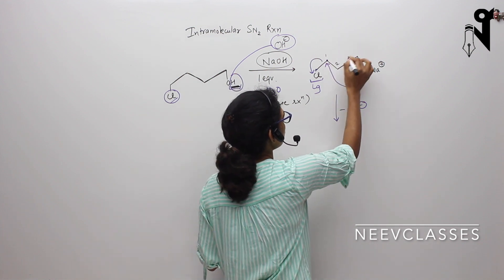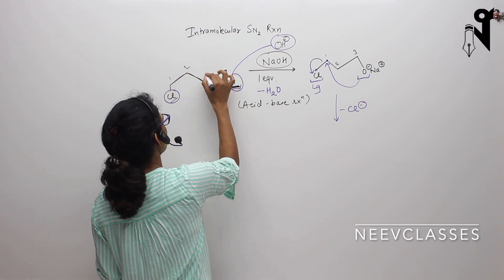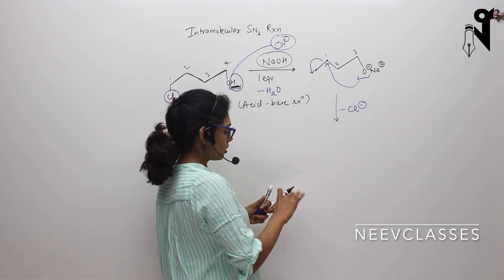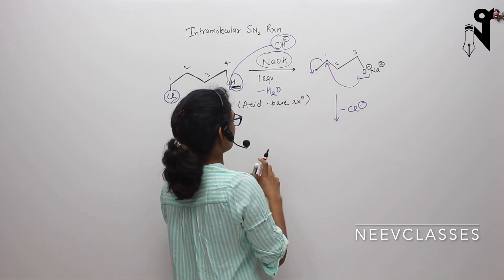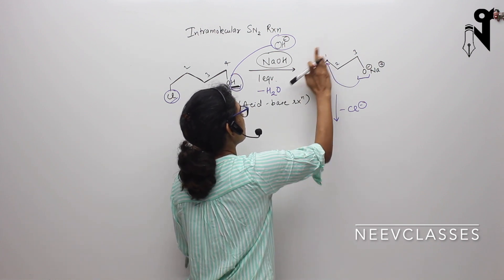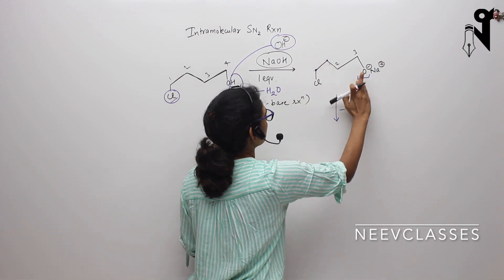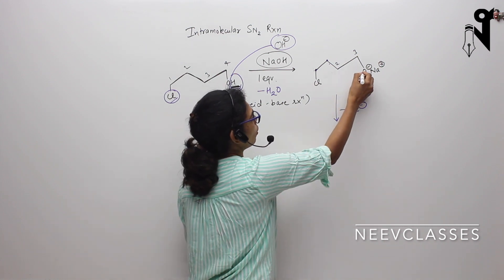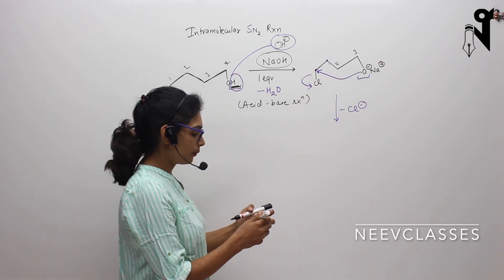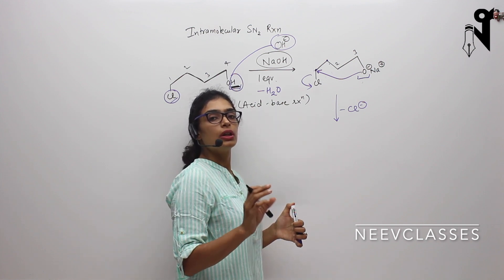How many carbons are there? One, two, three. Did I miss a carbon? One, two, three, four — I missed a carbon altogether. So the chlorine is here, and the attack will not happen on this carbon. Instead, this attack of oxygen will happen on this carbon and the chlorine will be removed and we will get a five-membered ring of ether.